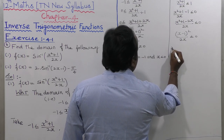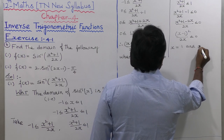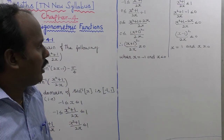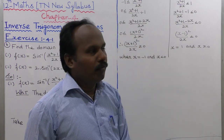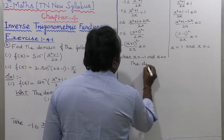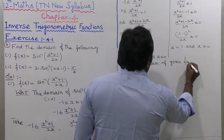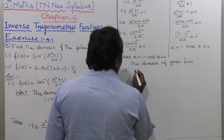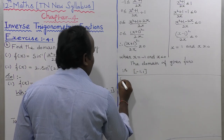From this, x equals plus 1 and x greater than or equal to 0. The value 0 is not considered, but x equals 1 is considered. Using the number line, the domain of the given function is the closed interval minus 1 to plus 1. That completes the first subdivision.